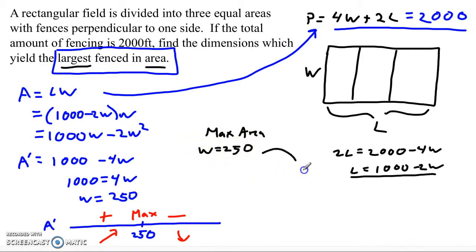To find the length, we simply plug back in to this equation. So we know that the length is 1,000 minus 2W. If W is 250, that would be 1,000 minus 500, and that tells us the length is going to be 500.